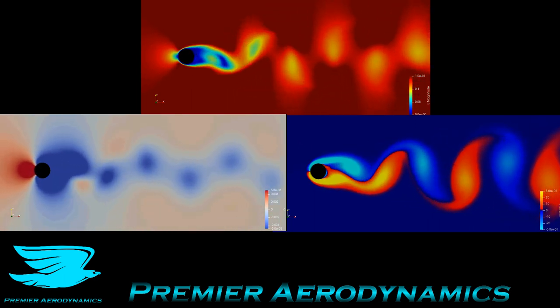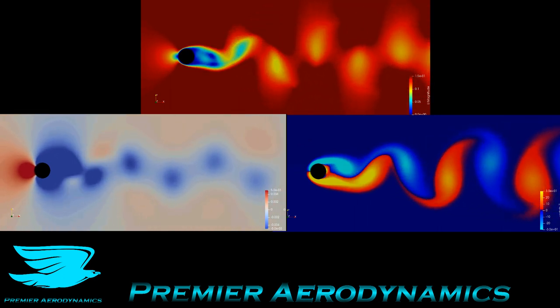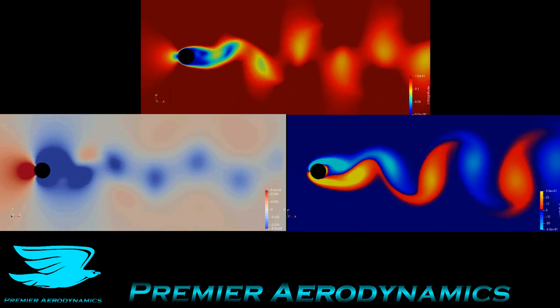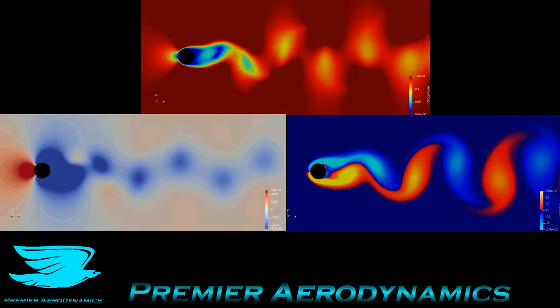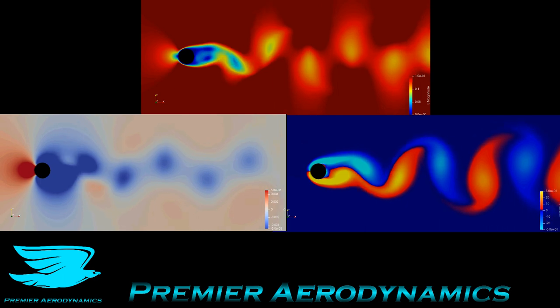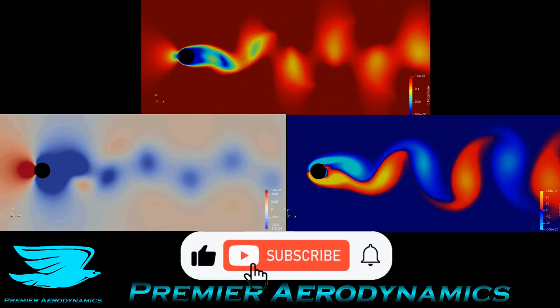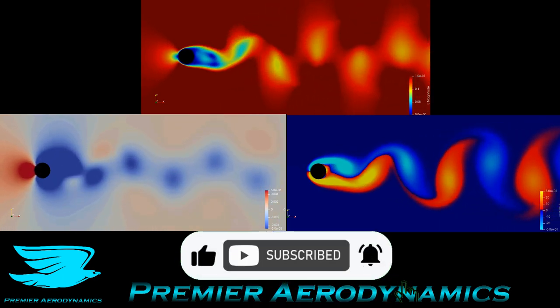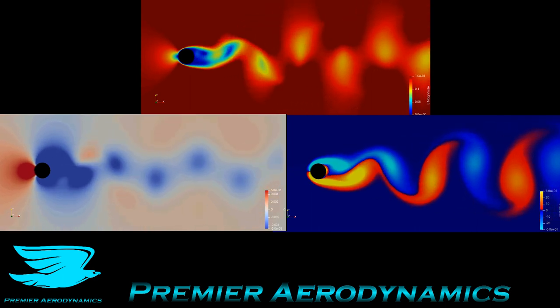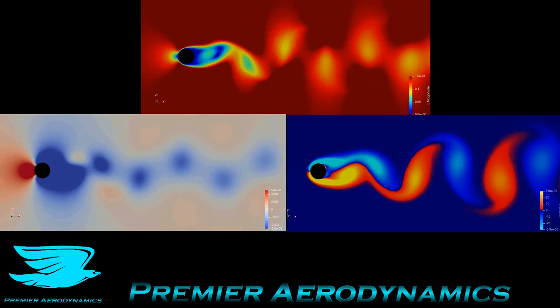And this von Karmann vortex street occurring is very normal for a cylinder and the reason why it occurs is because you have some sort of imbalance that happens between the two sides. So one side will then start to shed, the flow will separate at a certain point and then this will create an imbalance on the other side and then the other side will shed equally and then you'll start to get this flip-flopping back and forth as we see here.